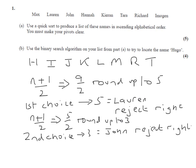We've now got two choices left, N plus 1 over 2. 2 plus 1 is 3, so that's 3 over 2, so we round up to 2.